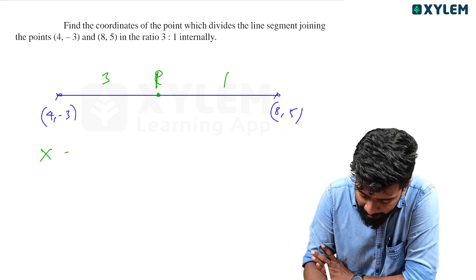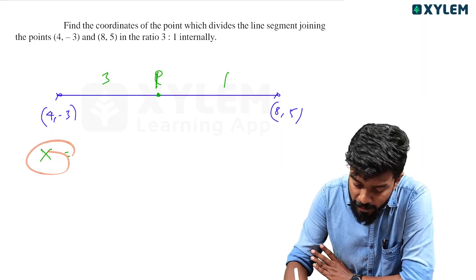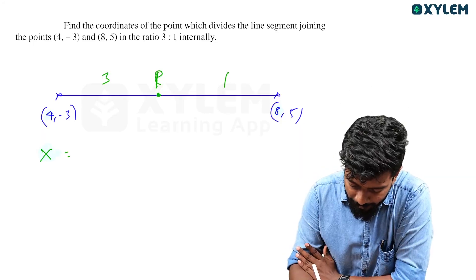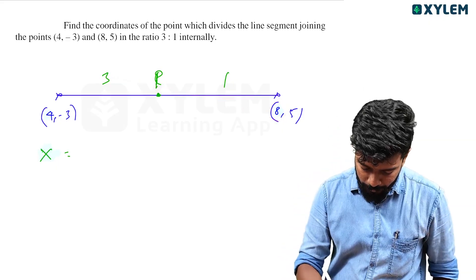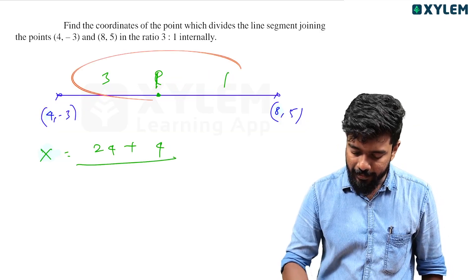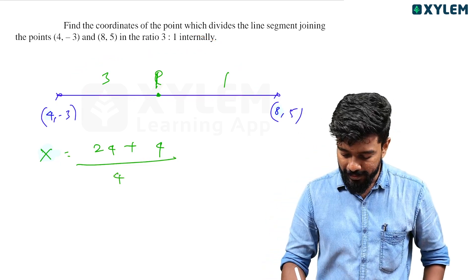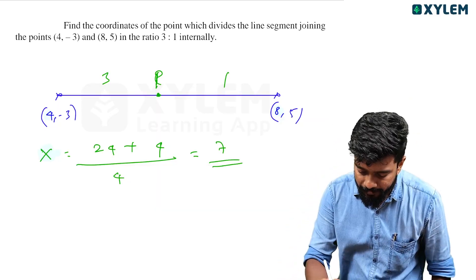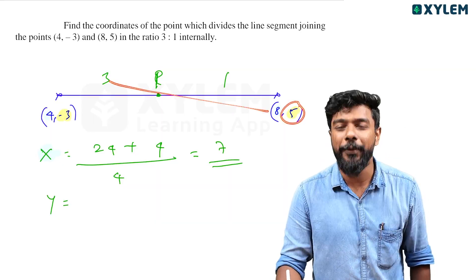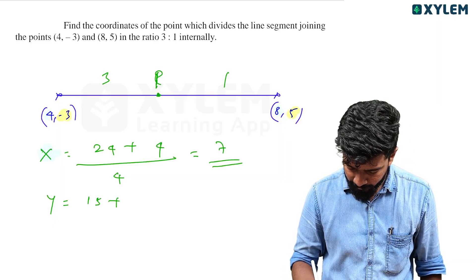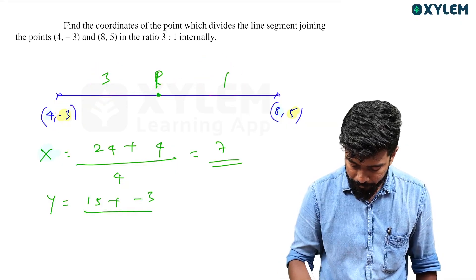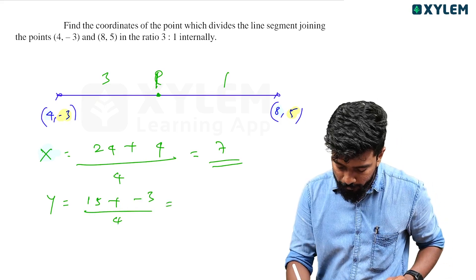For the x-coordinate of P: (3 × 8 + 1 × 4) divided by (3 + 1) = (24 + 4) / 4 = 28 / 4 = 7. For the y-coordinate of P: (3 × 5 + 1 × (−3)) divided by (3 + 1) = (15 − 3) / 4 = 12 / 4 = 3. So point P = (7, 3).